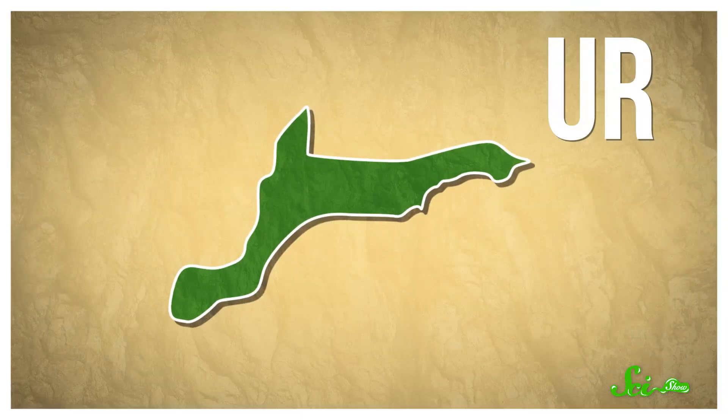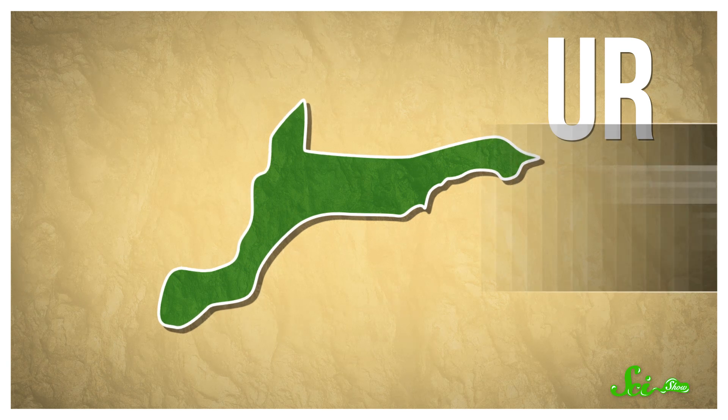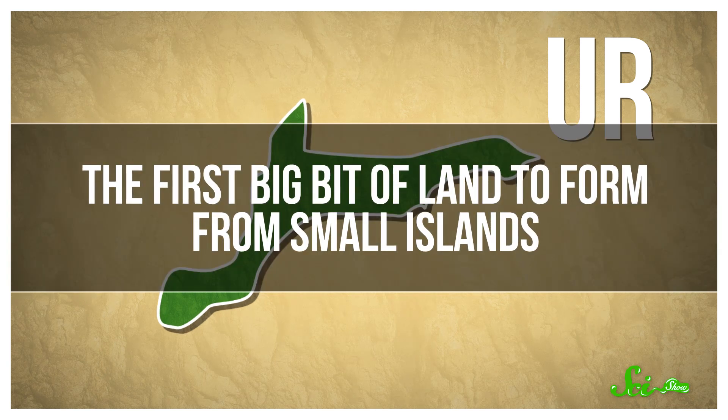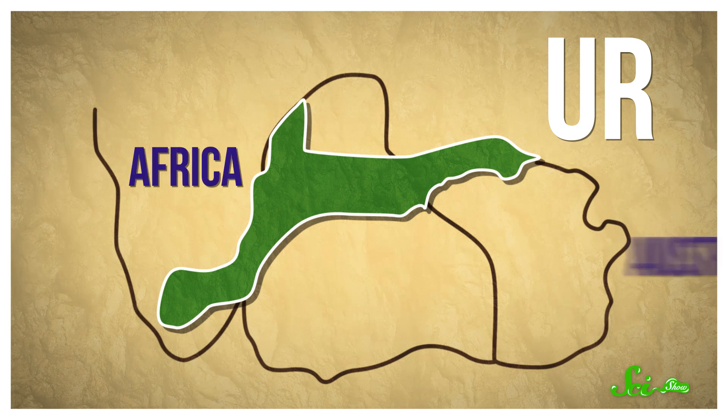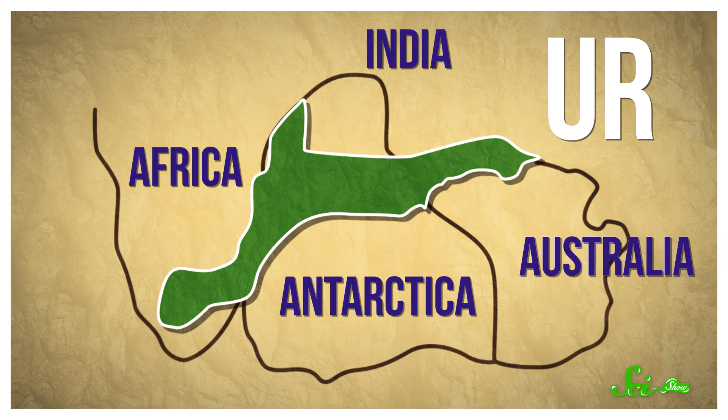The question of where the continents have been throughout Earth's history is a challenging puzzle, and one that's far from being solved. But we do have some tools to figure it out, and geologists have some ideas about the supercontinents that assembled before Pangaea. We call the very first continent Ur, and it was the first big bit of land to form from small islands. Ur goes back about three billion years, and was made up of bits of what is now Africa, Australia, India, and maybe Antarctica. In fact, Ur only broke up recently, when Pangaea did. A continent that can last nearly three billion years is one heck of a continent.